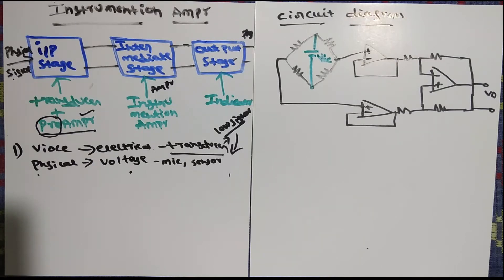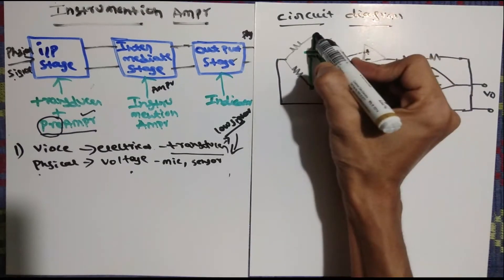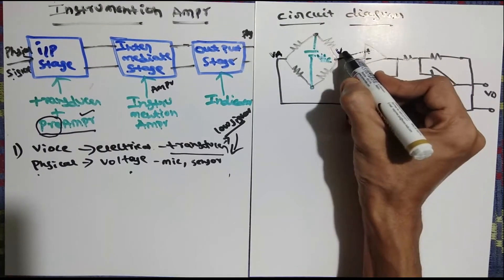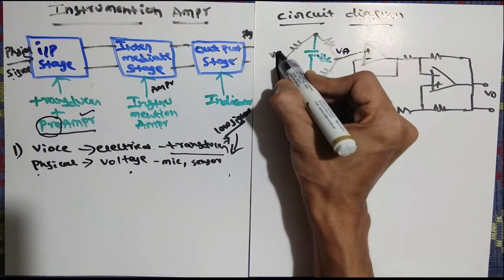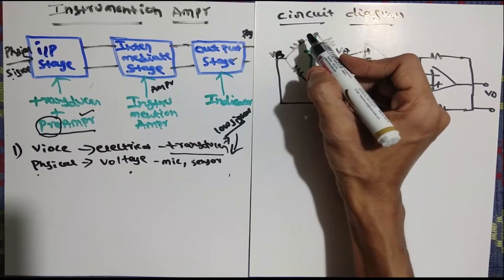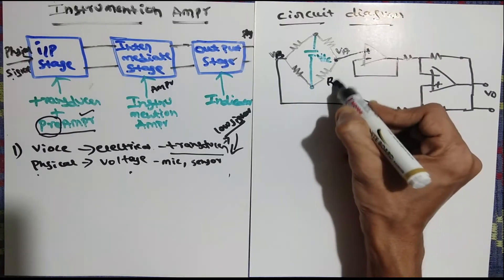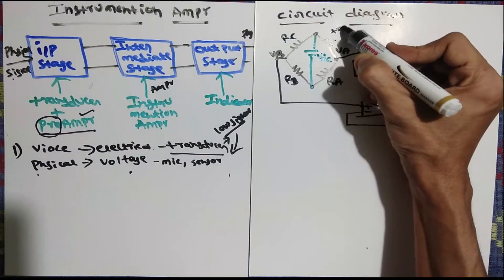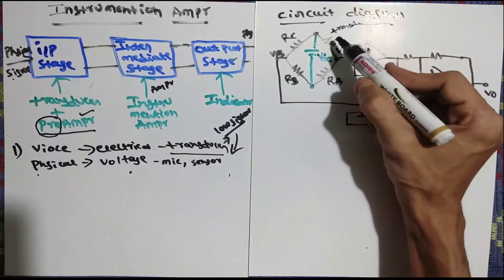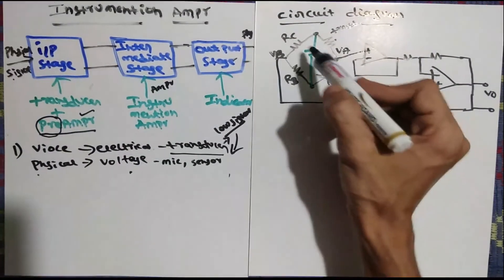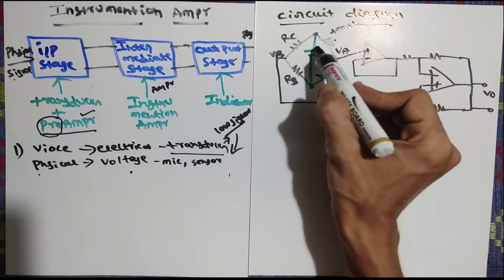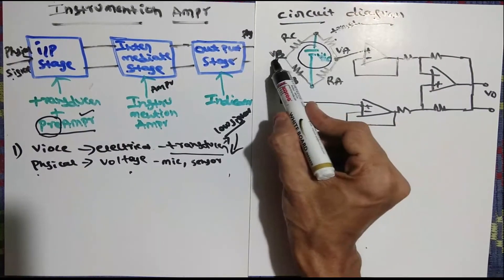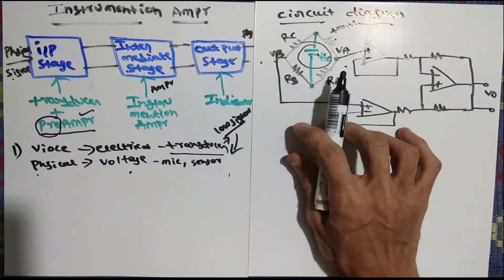For the circuit diagram, we use a bridge-type circuit. Consider one bridge: we call the voltages Va and Vb. The resistances are Ra, Rb, Rc, and the transducer resistance. In any bridge network there are four arms, and supply voltage Vdc is applied. The voltages Va and Vb at the two arms should be equal.